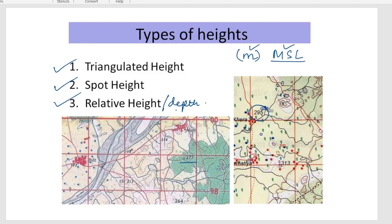Next we have relative height or relative depth. Here you can see something is written as 13R. In your map you can also get to see 20R. So what does this relative height or relative depth indicate?